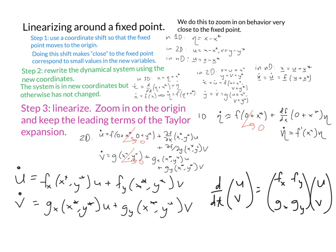So rewriting this using our matrix notation, d/dt of [u;v] equals [f_x, f_y; g_x, g_y] times [u;v]. These are all evaluated at (x*,y*), but I ran out of space to write that in.